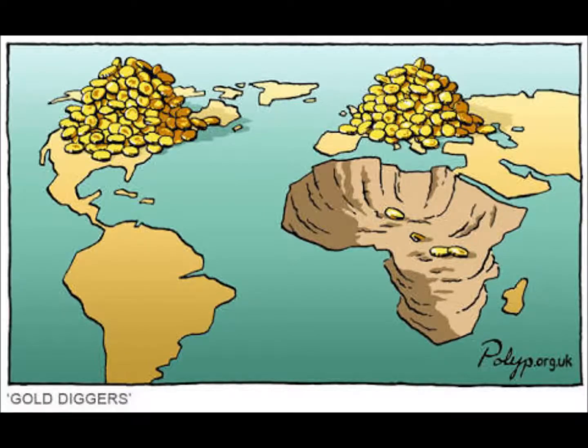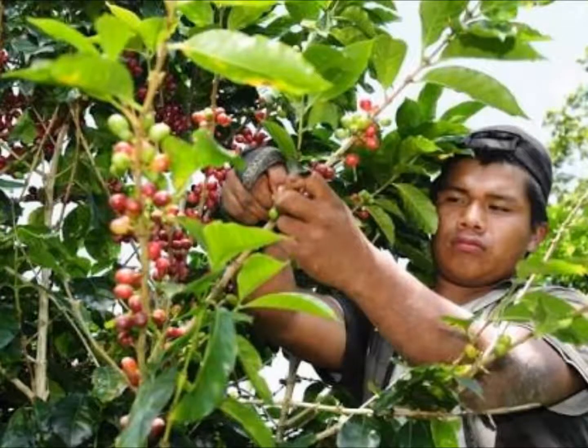Unfair trade occurs when richer countries buy raw materials at low prices, change them into manufactured goods and then sell these goods at high prices. The result is that poorer countries who produce the raw materials are unable to buy the manufactured goods because these prices are too high.